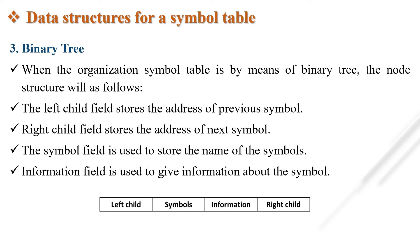The third method is binary tree. The most frequently referred names will tend to be at the front of the list, hence search time for most referred names will be least. When the symbol table is organized as a binary tree, the node structure is as follows: the left child field stores the address of the previous symbol, the right child field stores the address of the next symbol, the symbol field stores the name, and the information field gives information about the symbol. In a binary search tree, values of the left child are always less than the parent node, and values of the right child are always greater than the parent node.